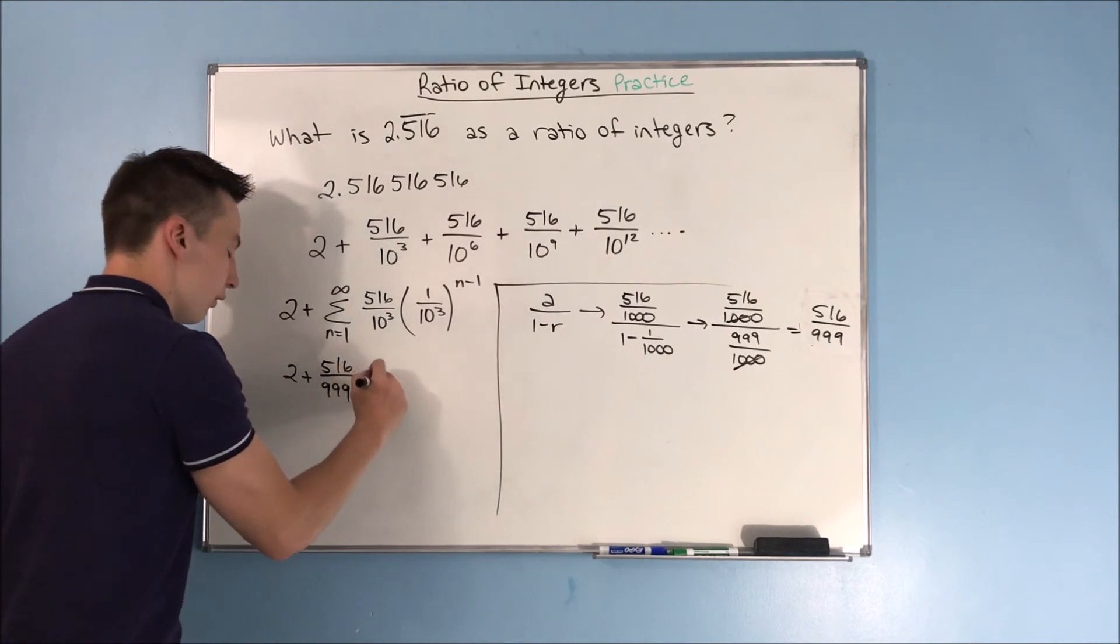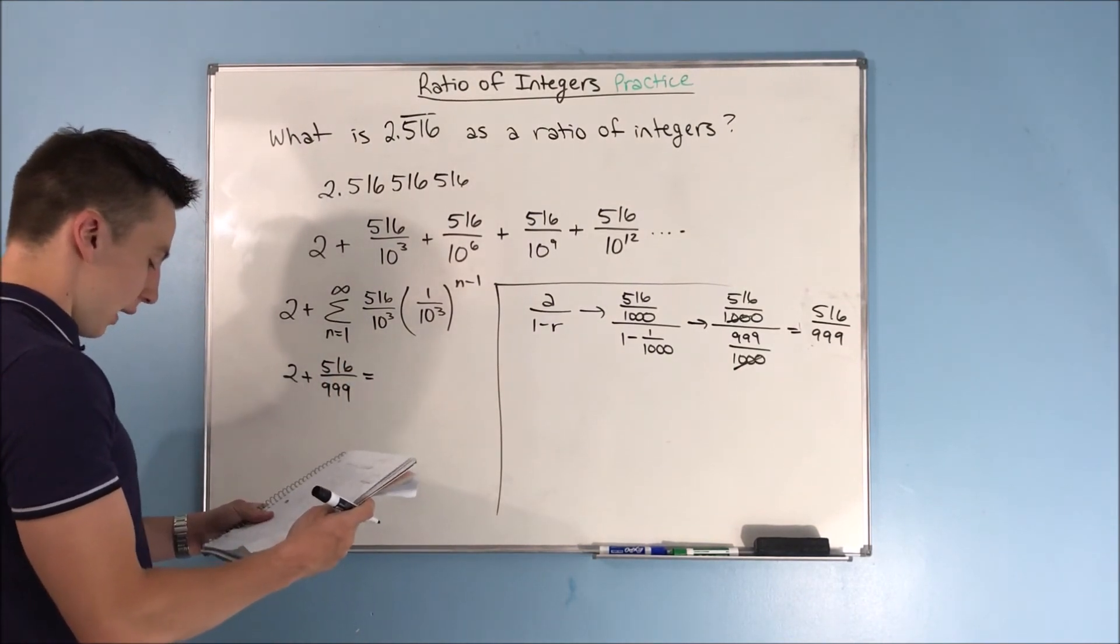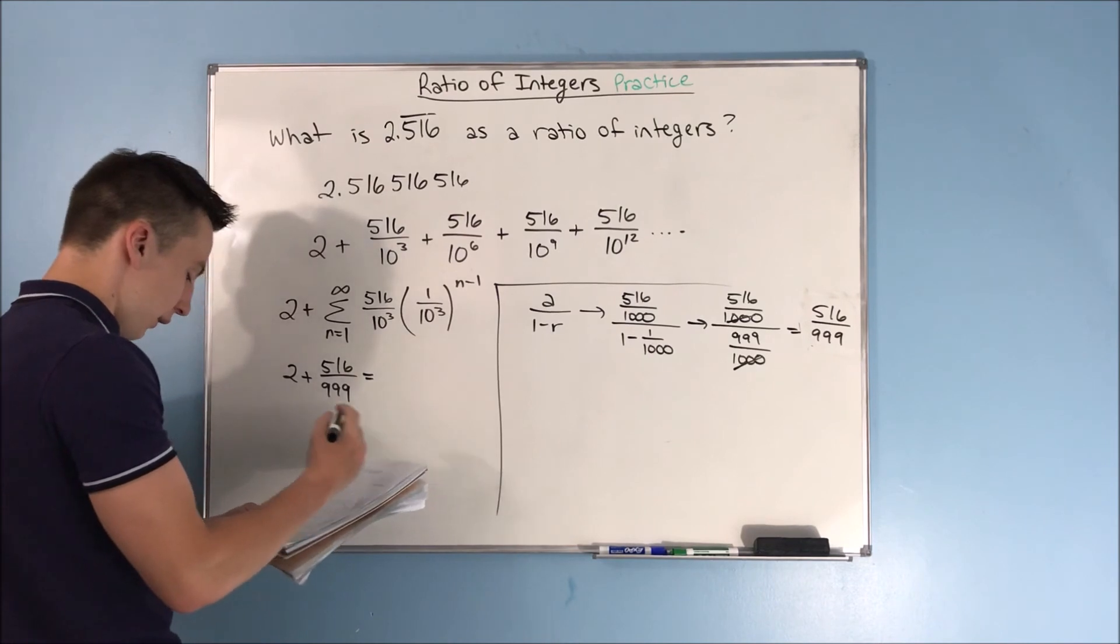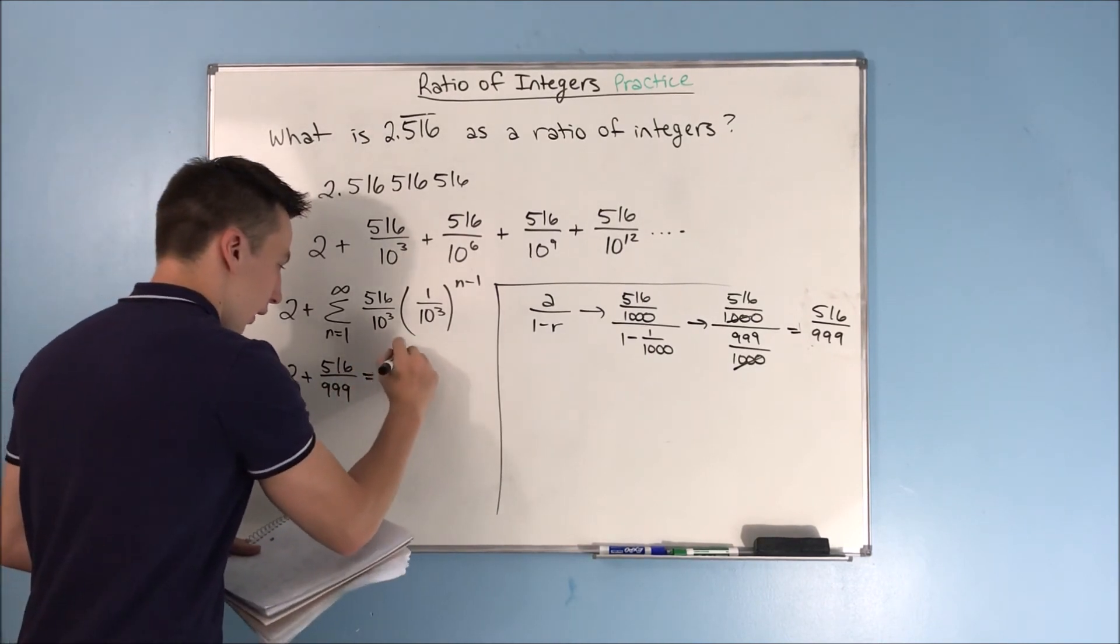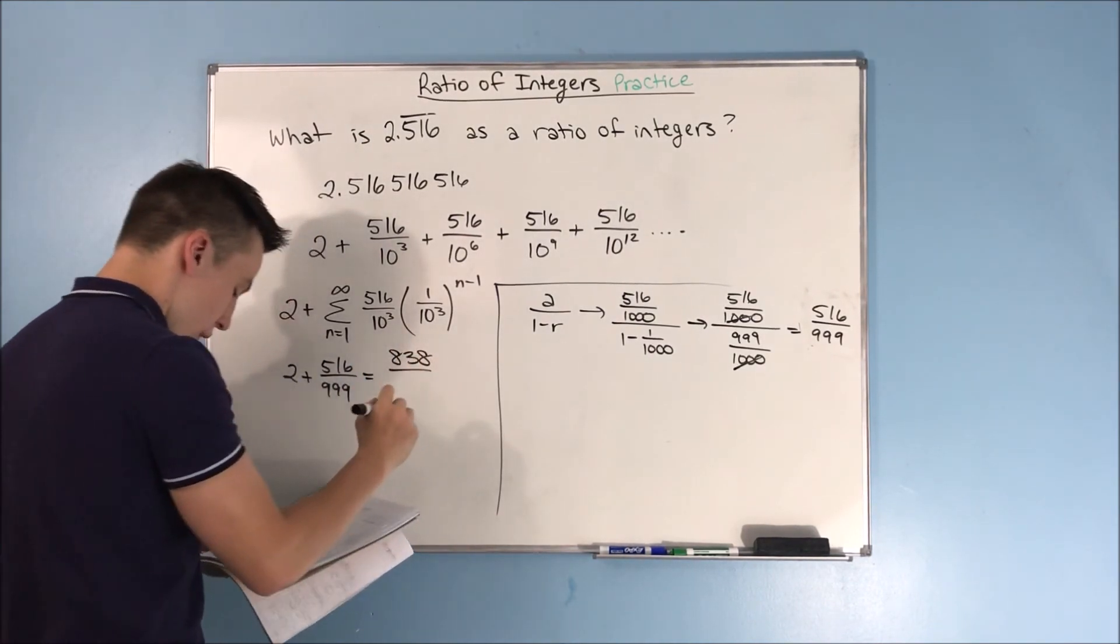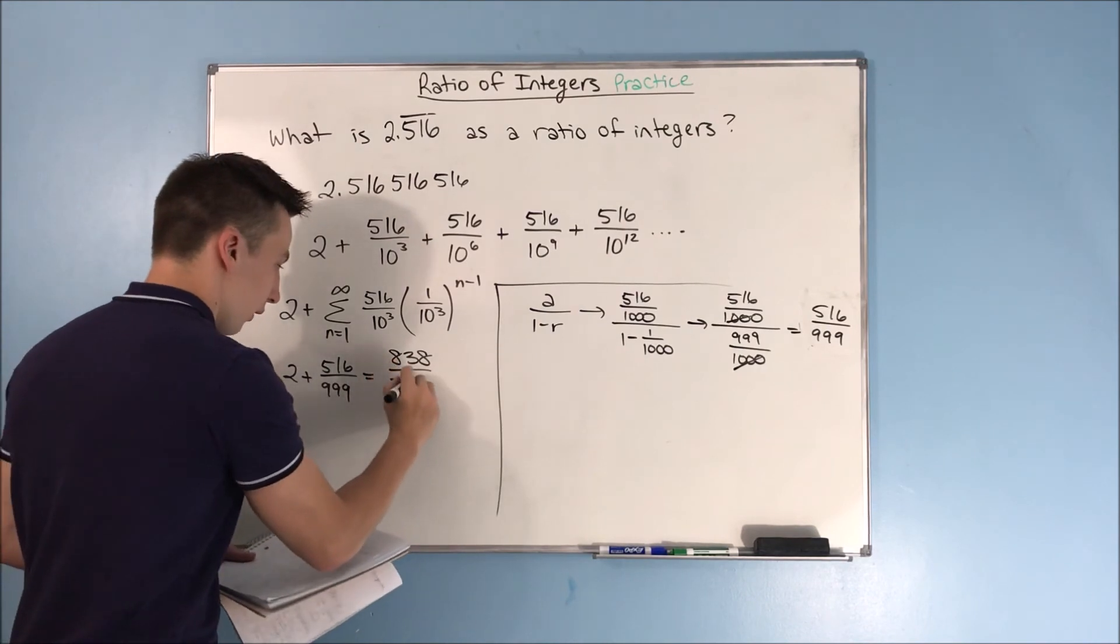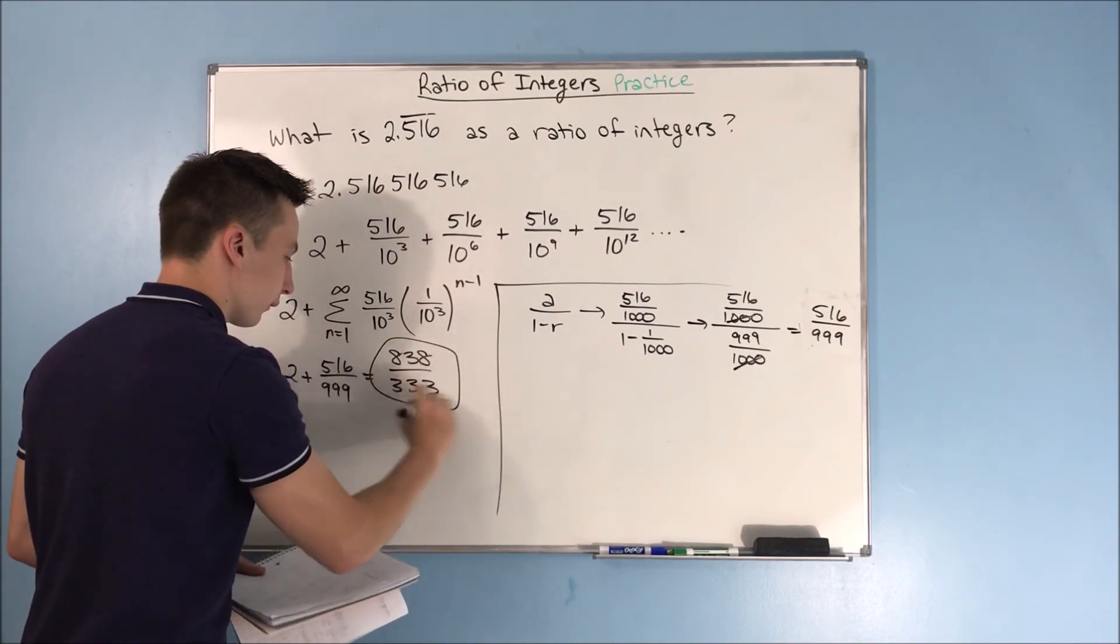And I'll just save you that all that crazy math. That's just going to be a mess. We end up with 838 over 333.